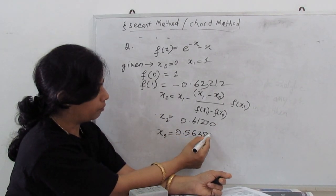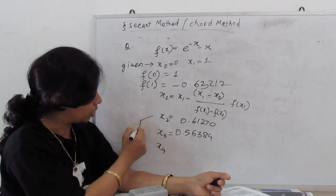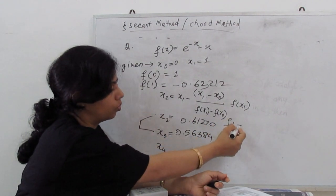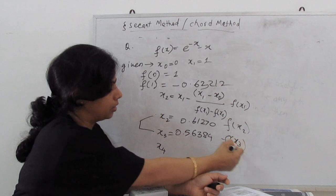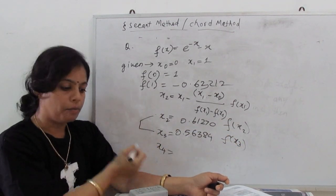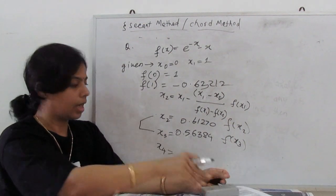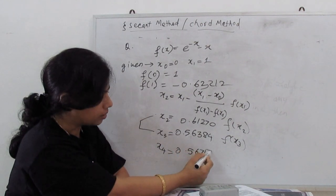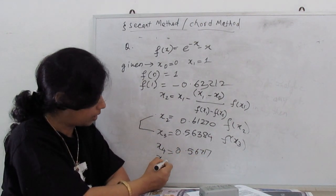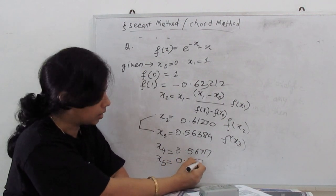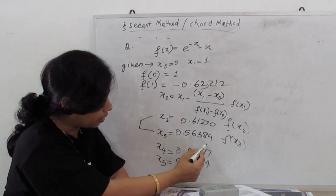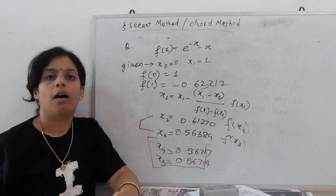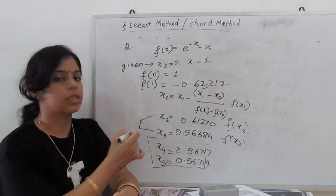We continue iterating. x_4 = 0.56717, then x_5 = 0.56714. Up to 4 decimal places, the value repeats. Hence, the root of the given equation is 0.5671. In these iteration methods, we repeat particular steps.